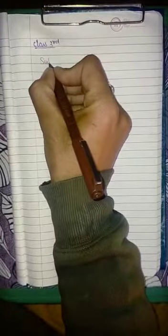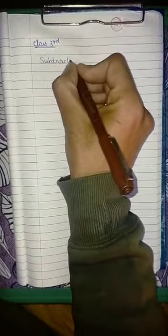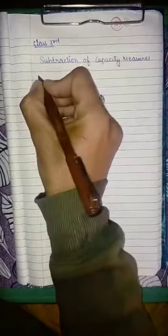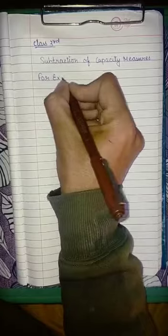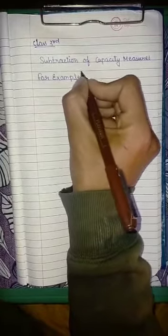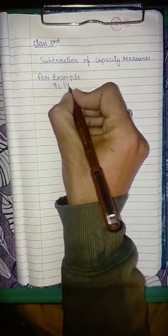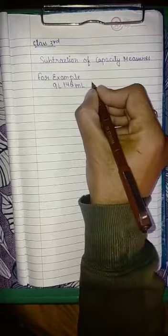In today's video we will study about subtraction of capacity measures. Let's take an example. For example, there are two capacity values given: 9 liter 148 milliliter, and you have to subtract it from 14 liter 374 milliliter.